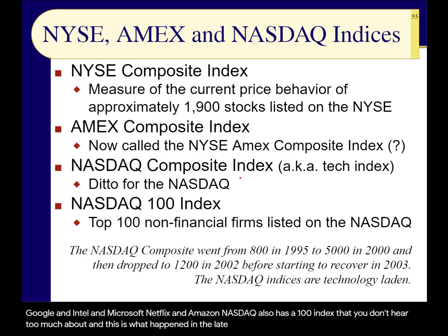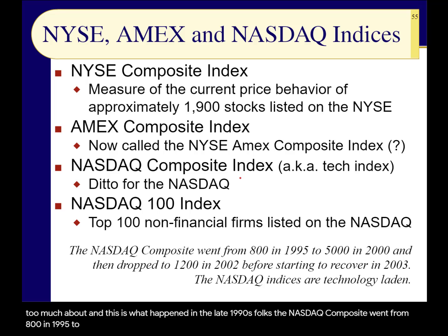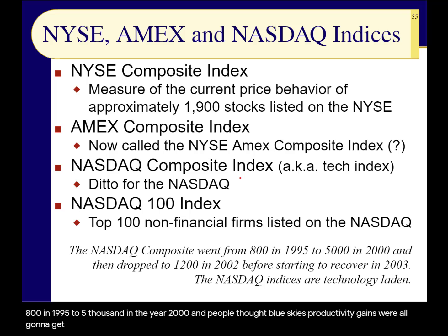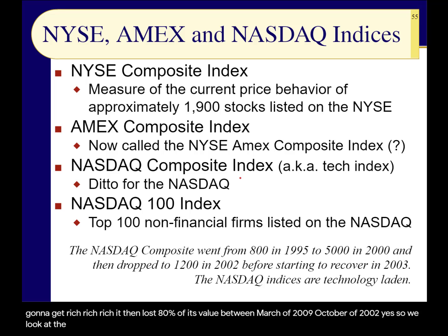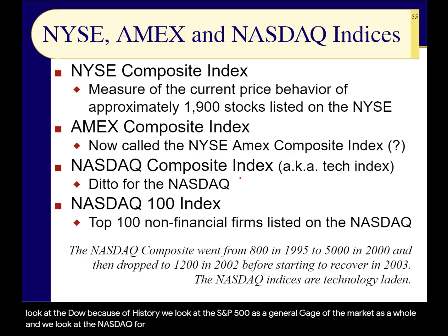NASDAQ also has a 100 index that you don't hear too much about. This is what happened in the late 1990s: the NASDAQ composite went from 800 in 1995 to 5,000 in the year 2000. People thought blue skies, productivity gains, we're all going to get rich. It then lost 80% of its value between March of 2000 and October of 2002.